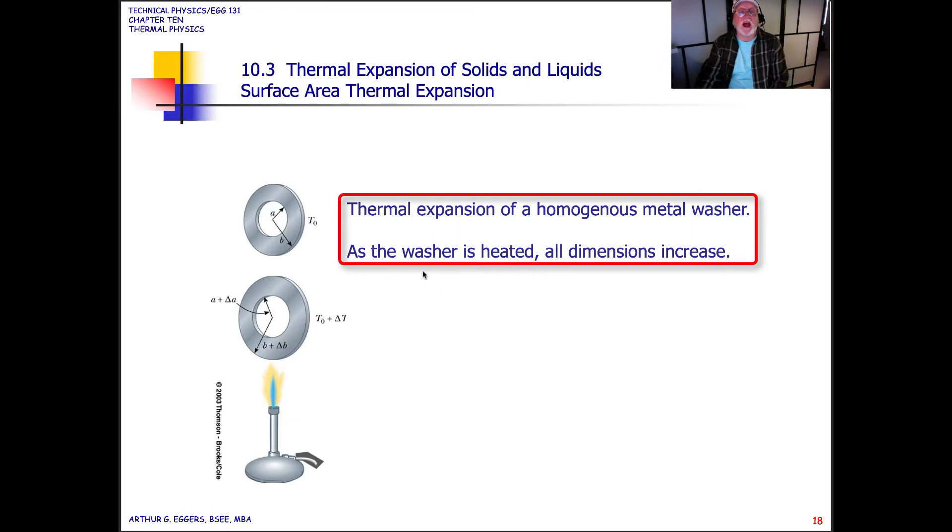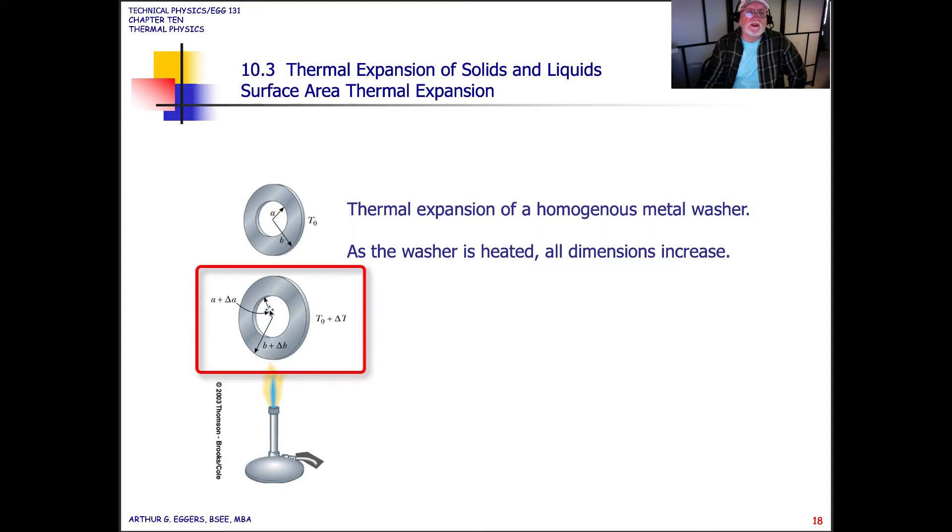And so we can look at different types and different shapes. Geometry is about looking at which portions of the material expand or contract and which do not. Thermal expansion of a homogeneous metal washer shows that as the washer is heated, all the dimensions increase. So the inside dimension would change with respect to the same amount as the outside relation. So we have A plus delta A for the internal radius, B plus delta B for the external radius, and then the temperature initial plus delta T.